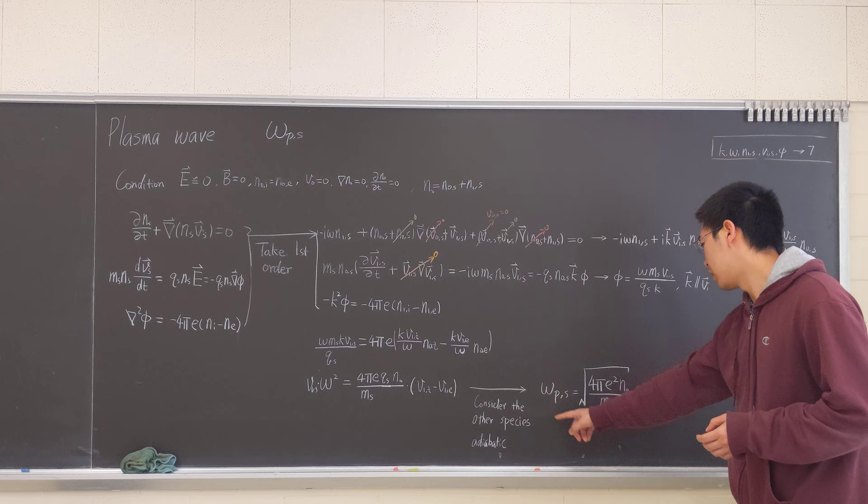Omega P S equals 4 pi e squared N0 over M S.